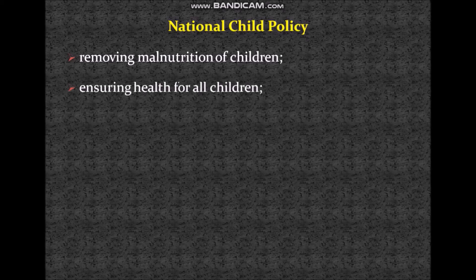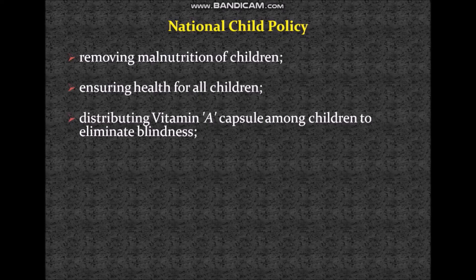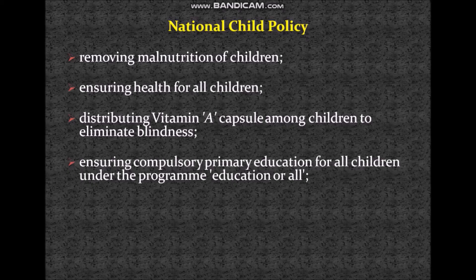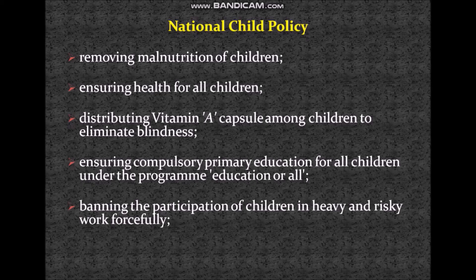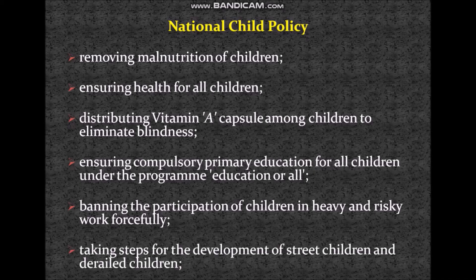Next, distributing vitamin A capsule among children to eliminate blindness — and this capsule is for free. Next, ensuring compulsory primary education for all children under the program Education for All. Then, banning the participation of children in heavy and risky work forcefully. Next, taking steps for the development of street children and derailed children.